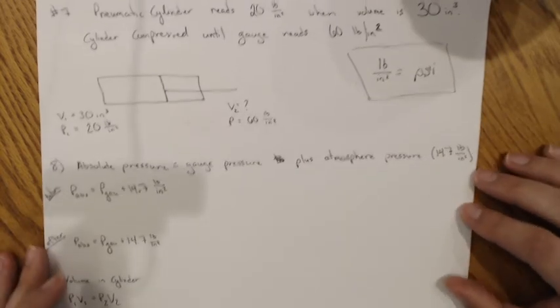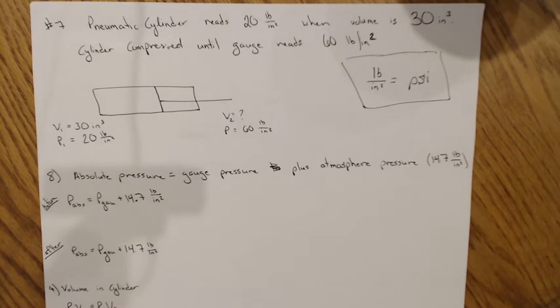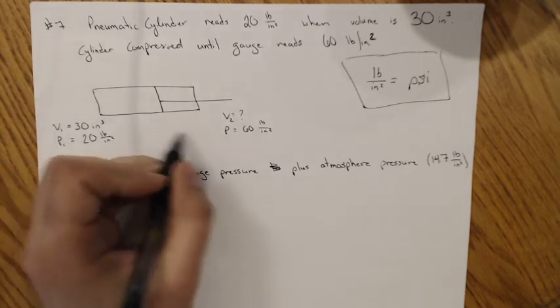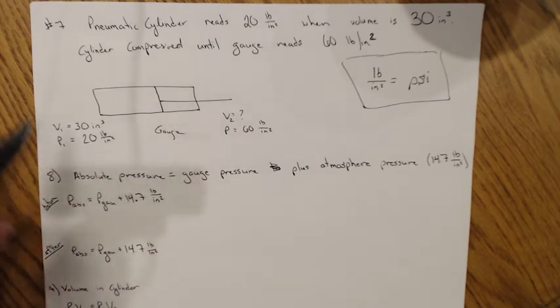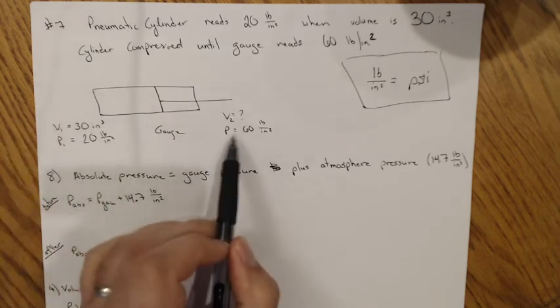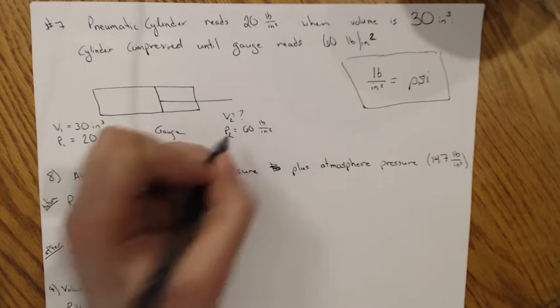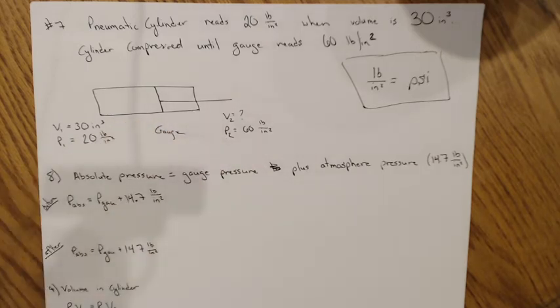I believe that's most of our first page done from the practice problems I gave everybody. Off to the next one. This one starts off at number 7. I have a pneumatic cylinder which reads 20 pounds per square inch or PSI. When the volume is 30 cubic inches, the cylinder is compressed until the gauge reads 60 PSI. And I drew my little picture again, and my gauge is going to be in here in the middle. Before I'm reading these values, so I have volume 1 and pressure 1, that's before it's compressed. Then I have volume 2 and pressure 2, so that's after it's been compressed.